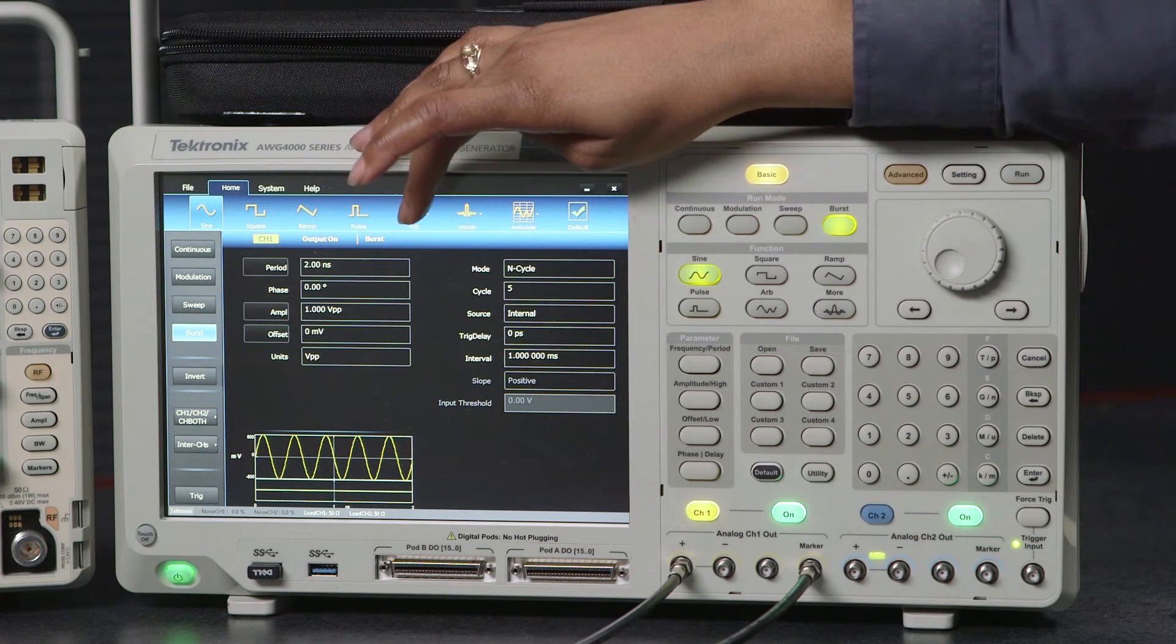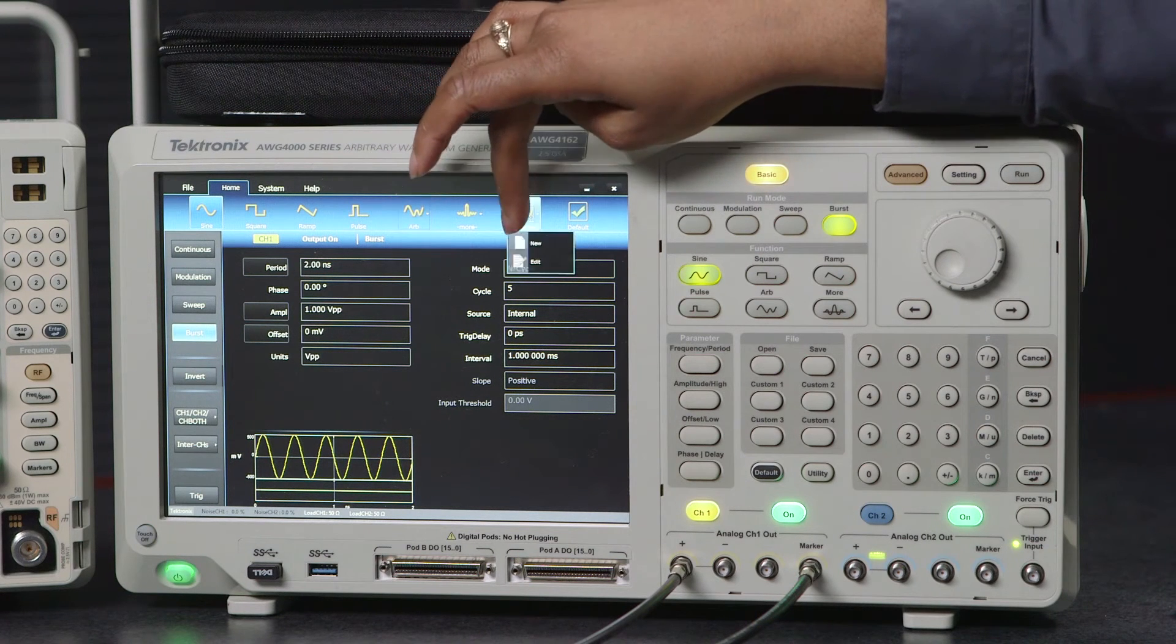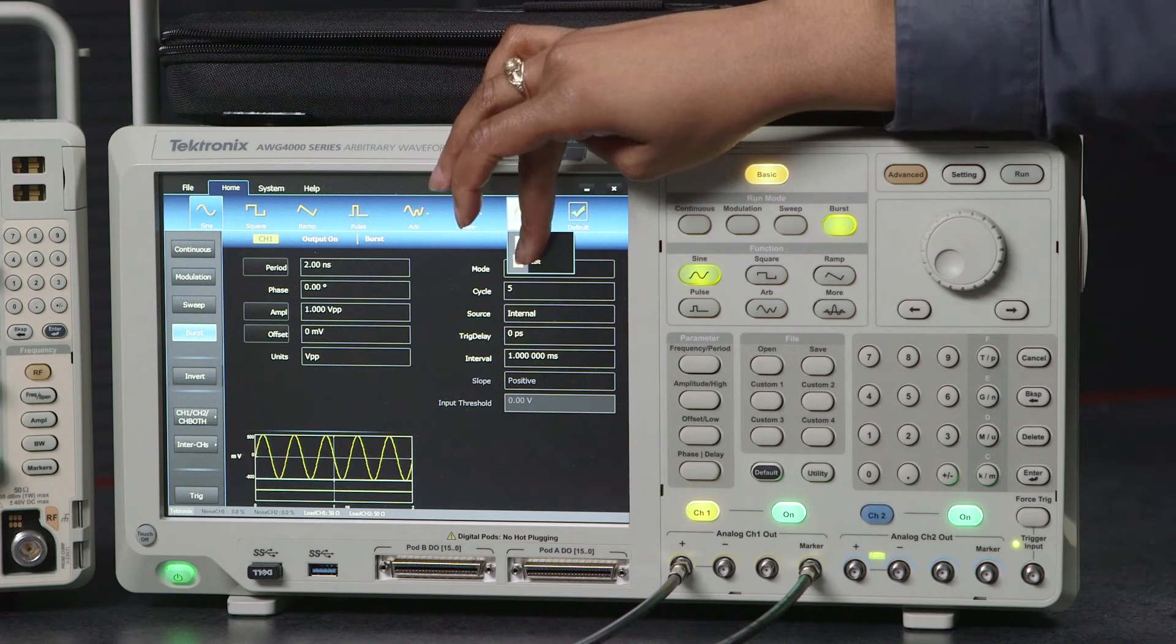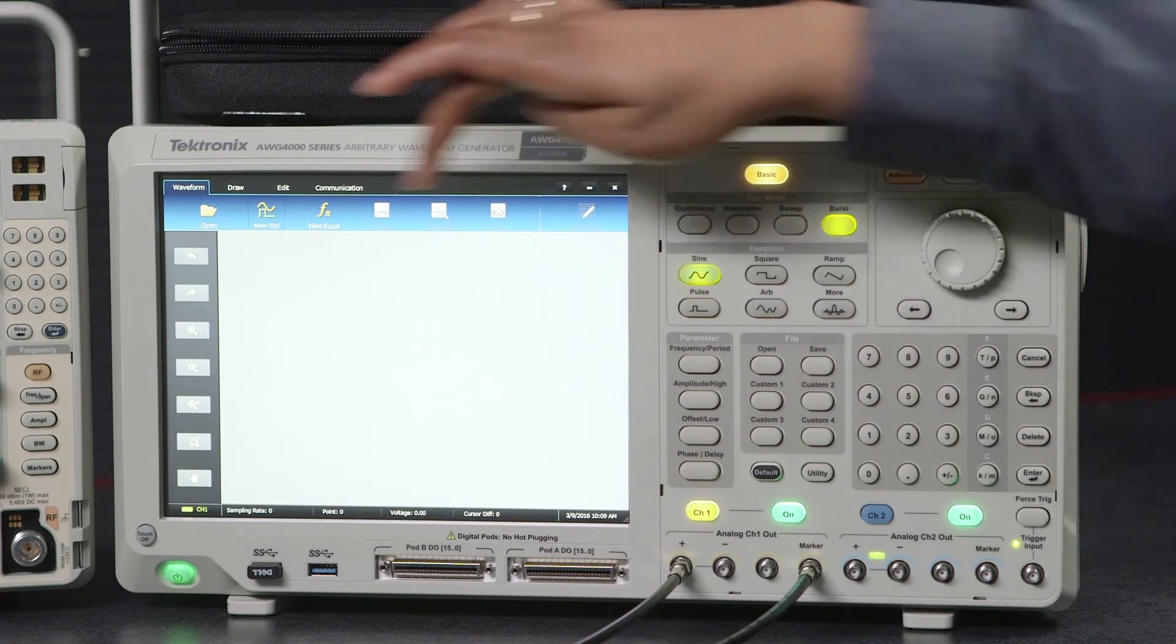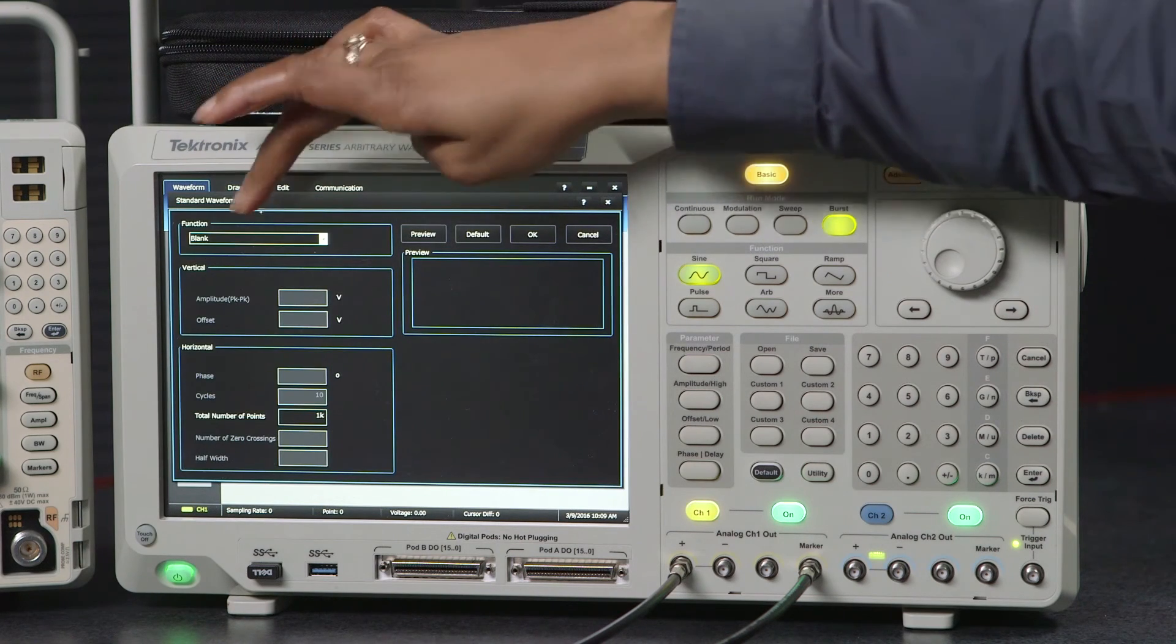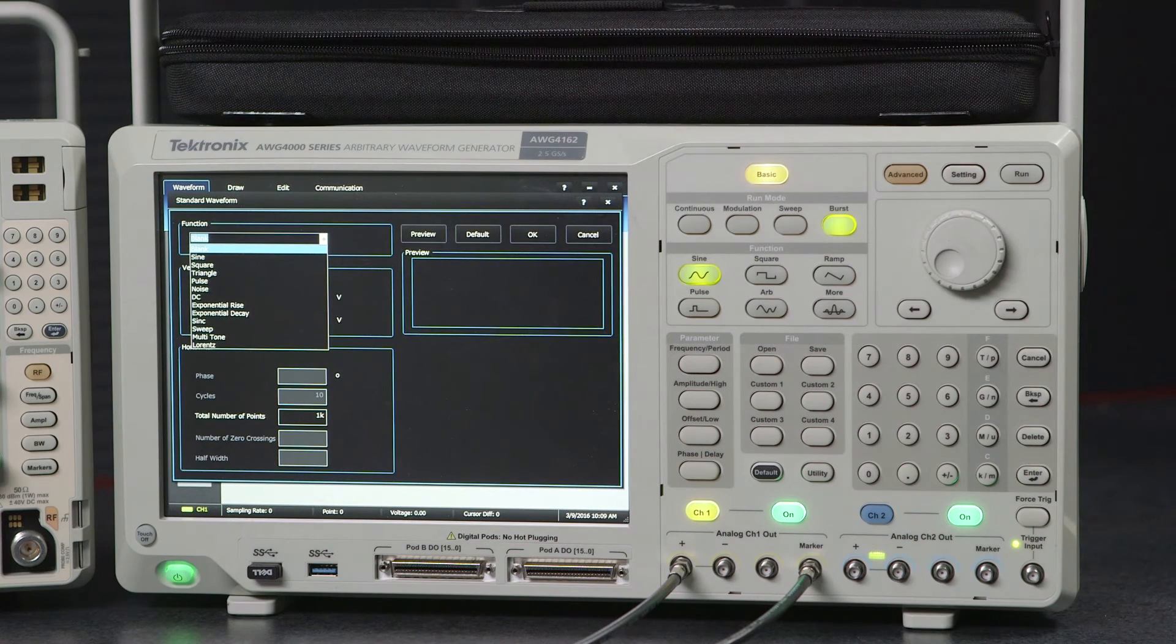We can actually go here to the top and select to build an arbitrary builder and create a new waveform. To start our first new waveform we're going to go to a new standard waveform and select under the function menu from a number of options you see here.